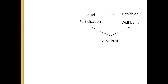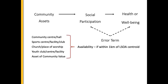Because of endogeneity concerns and reverse causality with social participation on either health or wellbeing, we use an instrumental variable approach. Community assets were found to be a good predictor of social participation. The community assets data we collect covers community centres, sports centres, places of worship, youth clubs, and assets of community value. We use an indicator of whether they are within one kilometre of an individual's LSOA centroid.